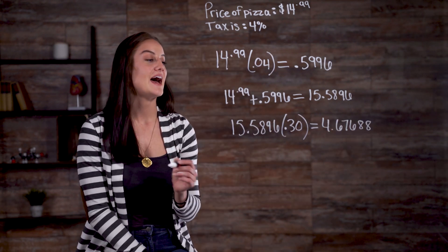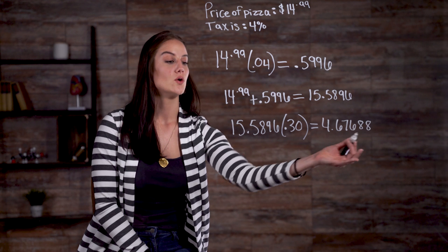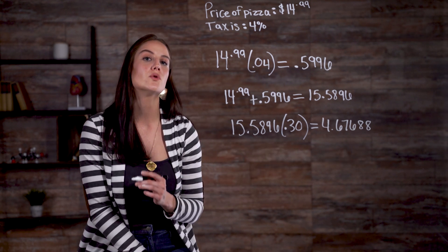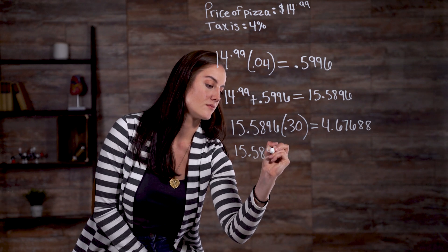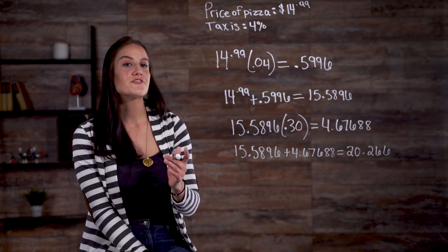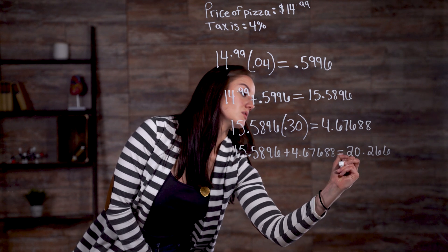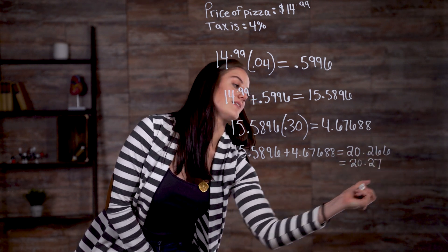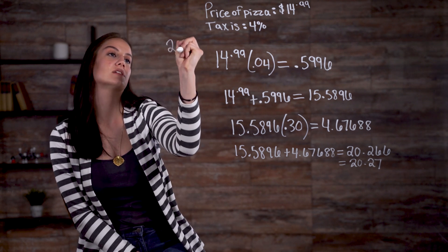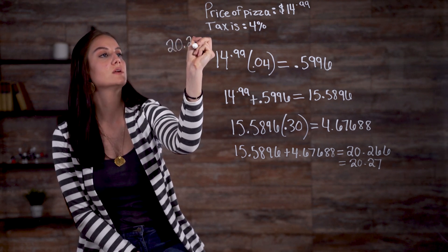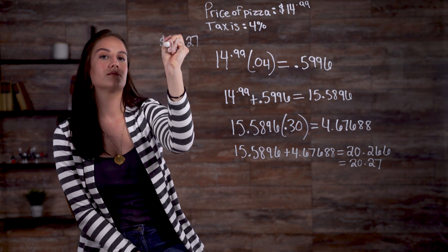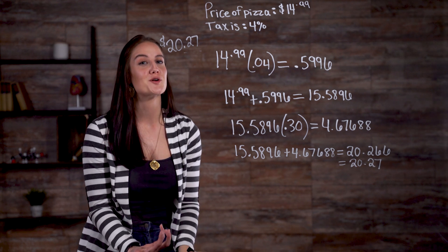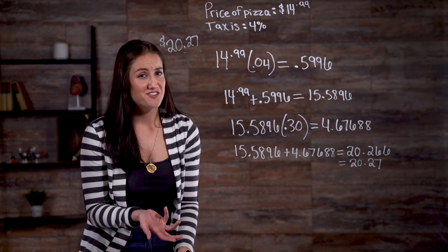Lastly, we need to add 4.67688 with 15.5896 to reach our total number. After rounding up, we reach $20.27. So the total order for this pizza would be $20.27.